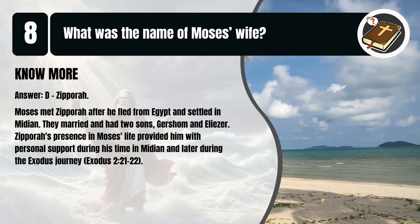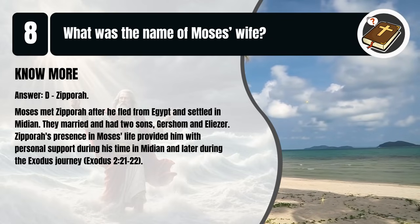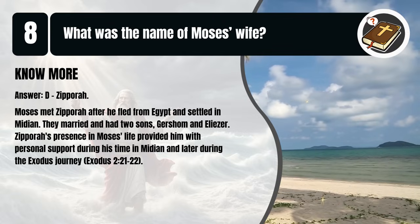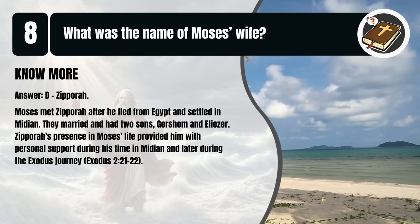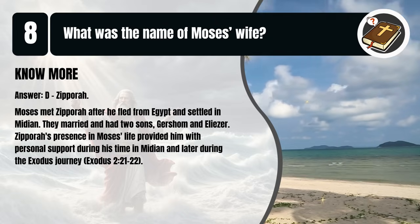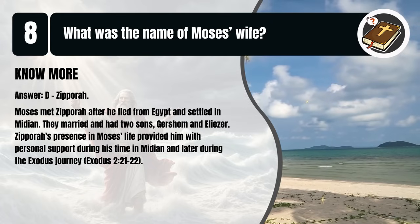That's D. Zipporah. Moses met Zipporah after he fled from Egypt and settled in Midian. They married and had two sons, Gershom and Eliezer. Zipporah's presence in Moses' life provided him with personal support during his time in Midian and later during the Exodus journey. Exodus 2:21-22.